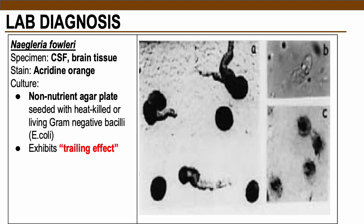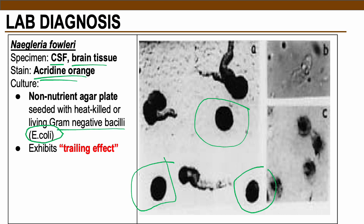For the diagnosis of Naegleria fowleri, the specimen of choice is CSF or brain tissue. To highlight the trophozoites in the sample, acridine orange is used as a stain. For culture, non-nutrient agar plates seeded with gram-negative bacilli such as E. coli are used — the E. coli serves as food for the trophozoites. One drop of sample is added to the non-nutrient agar plate with E. coli; if trophozoites are present, they will chase and consume the E. coli, and a trailing effect will be evident on the culture medium.